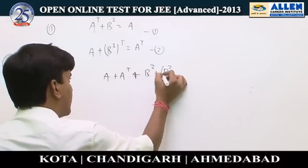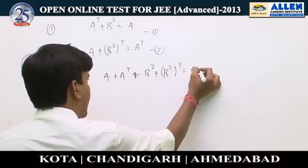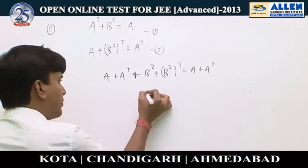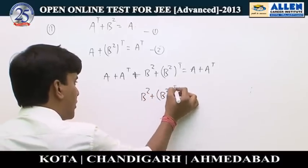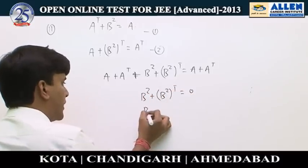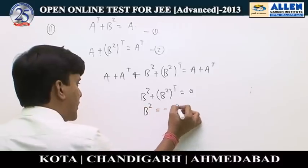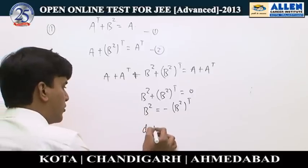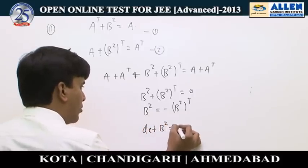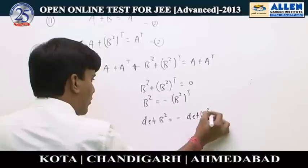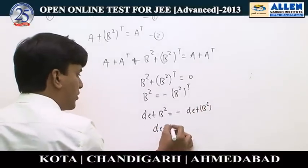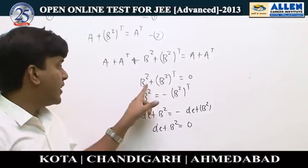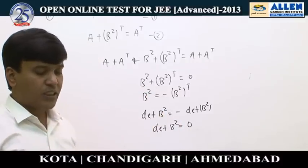Adding the two equations gives A plus A transpose equals B² plus B² transpose plus A plus A transpose. Cancelling A plus A transpose, we get B² plus B² transpose equals the null matrix, meaning B² is skew-symmetric. Taking determinants: det(B²) equals negative det(B²), so det(B²) equals 0.